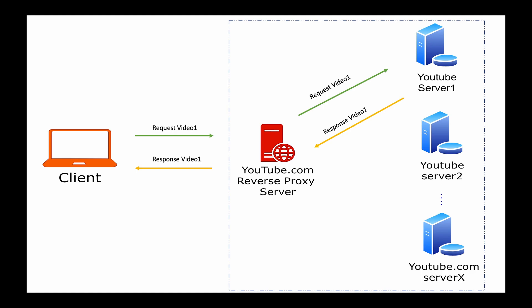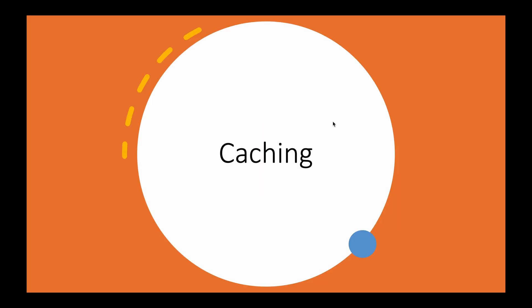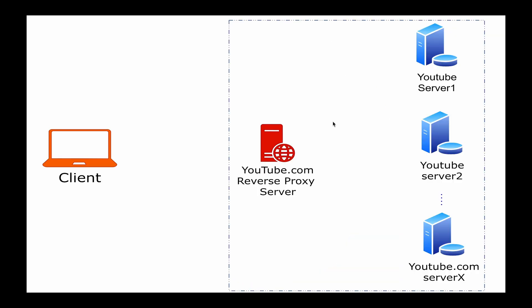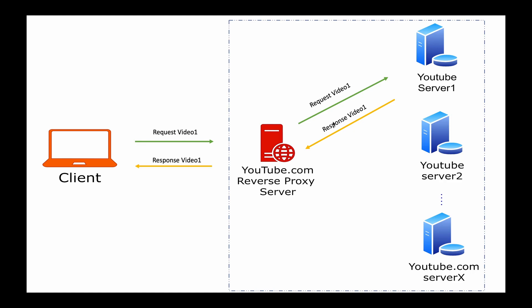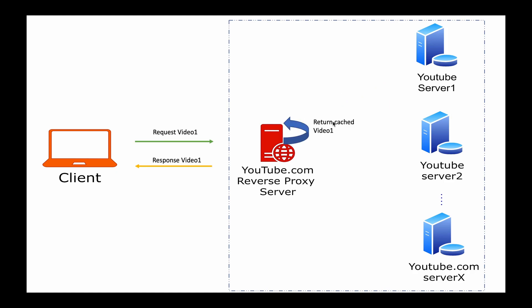So what do we gain from this setup? The first benefit is caching. As we saw earlier in the forward proxy setup, the reverse proxy server can also cache any non-changing data locally. Thus, when another client sends a request for the same content, it can serve it from its local cache instead of contacting the servers. This provides the advantages of low network traffic, low latency, and reduced load on the server.